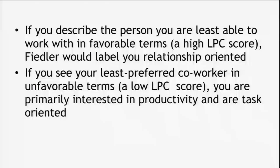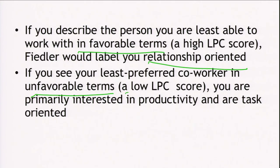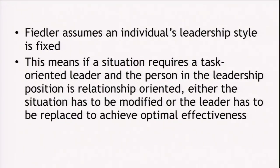If you describe the person you are least able to work with in favorable terms, that is a high LPC score, then Fiedler would label you as relationship oriented. On the other hand, if you see your least preferred co-worker in unfavorable terms — a low LPC score — then you are primarily interested in productivity and are task oriented. Fiedler assumes an individual's leadership style is fixed, meaning if a situation requires a task oriented leader but the person is relationship oriented, either the situation must be modified or the leader replaced.